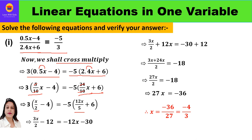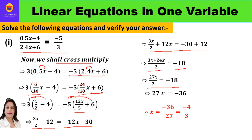Opening the brackets: 3 times x/2 gives 3x/2, and 3 times minus 4 gives minus 12. Minus 5 times 12x/5: the 5s cancel to give minus 12x, and minus 5 times 6 gives minus 30. Now take like terms to one side and constants to the other: 3x/2 plus 12x equals minus 30 plus 12. Taking the LCM gives (3x plus 24x)/2 equals minus 18.